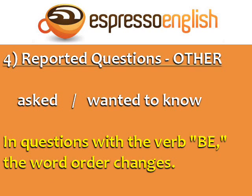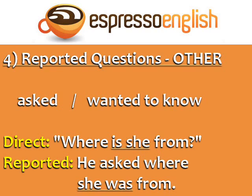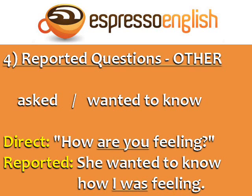In reported questions with the verb 'be', the word order changes. For example — Direct: 'Where is she from?' Reported: 'He asked where she was from.' You can see the word order changes: 'is she' becomes 'she was' in the reported question. Here's another example — Direct: 'How are you feeling?' Reported: 'She wanted to know how I was feeling.' The word order changes from the direct to the reported question.